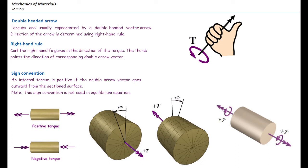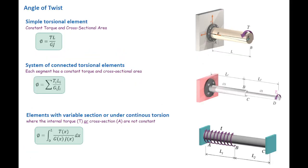For this problem, both double arrows point outward from their respective cut surfaces. The rule is: if the double arrow representing torque is outward from the cut surface, that torque is positive. So both double arrows here are positive. In the next video, we will solve some examples to understand how to use these equations to determine twist in torsional elements.